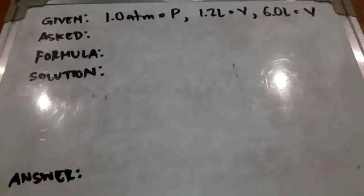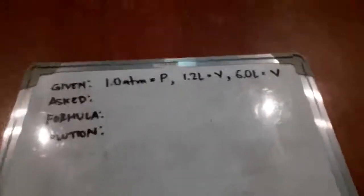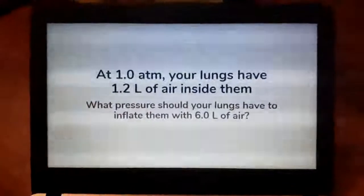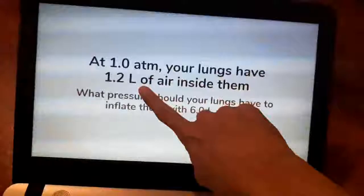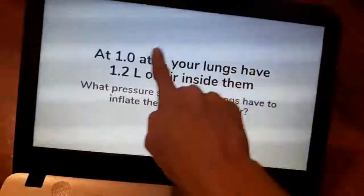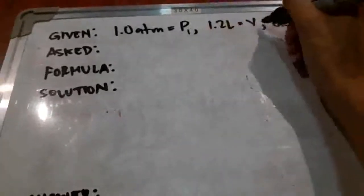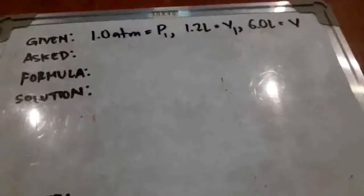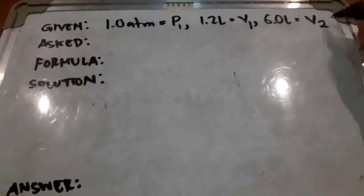Now we have two quantities of volume, but we need to figure out where exactly they fit in in our different formulas. Recall that our formulas have subscripts of 1 and 2, meaning there are starting situations and ending situations. So going back to the problem, we started out with the 1 atm and the 1.2 liters. So again, at one atmospheric pressure, your lungs will have this much air inside them. So this is our first situation. So we label our given here as P1 and V1. They're not simply just pressure and volume. They are P1 and V1, while 6.0 liters is part of the ending situation or scenario. So we label it V2.